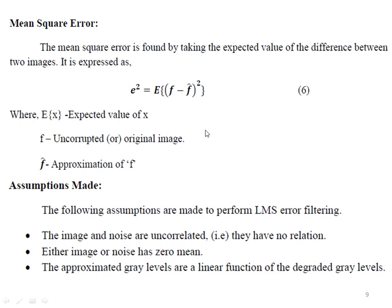We have to do the assumptions for the LMS filter. The first assumption is that the noise has a zero mean. This is not a different relation — the assumption is that the image and the noise are such that the noise is zero mean.